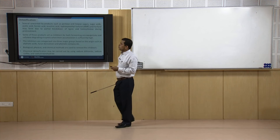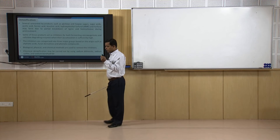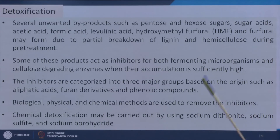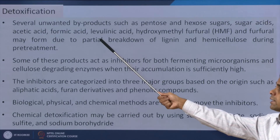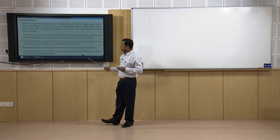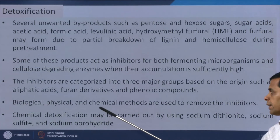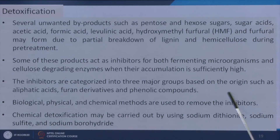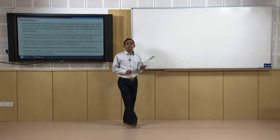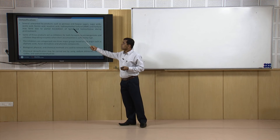Now we will see detoxification. During pretreatment, the lignin compounds are removed, but in the process some compounds such as furfurals, levulinic acid, formic acid, and acetic acid are formed. These compounds harm microbial growth. Biological, physical, and chemical methods are used for removal of these toxic compounds or inhibitors. Chemical detoxification may be carried out using sodium dithionite, sodium sulphite, and sodium borohydride, so that detoxification compounds are not available in the final product.